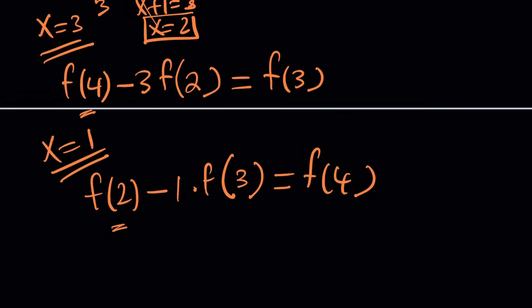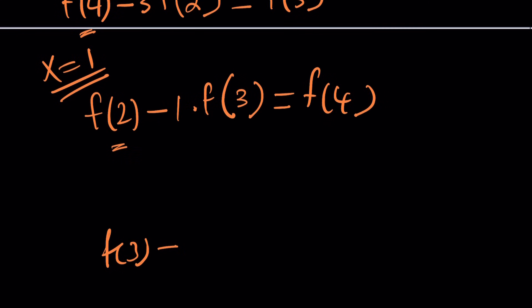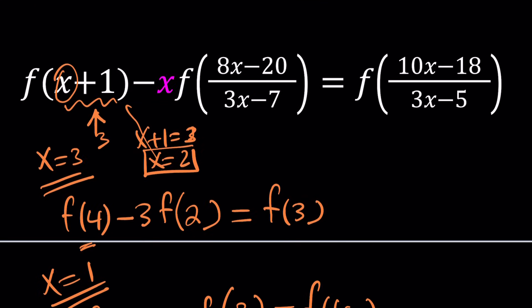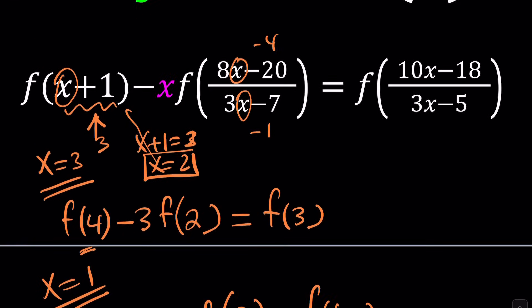Yes, let's do it. Let's clean this up one more time so we can start fresh. Now, x is going to be 2 everywhere. This is going to give us f(3), as expected, minus 2 times, because that's x, f of, what do you expect to get here, right? Let's see. If x equals 2, this is going to be 16 minus 20, which is negative 4. This is going to be 6 minus 7, which is negative 1.